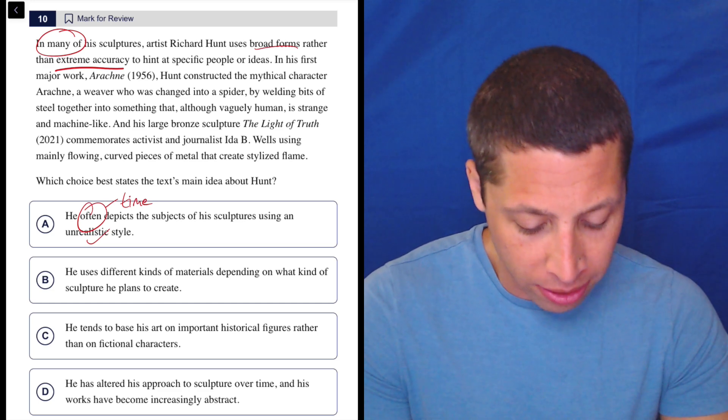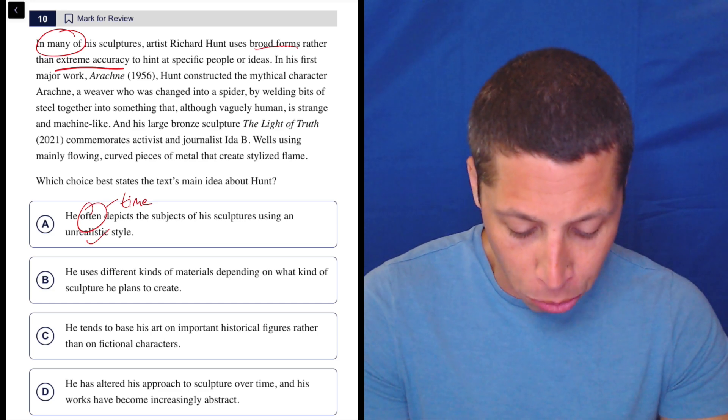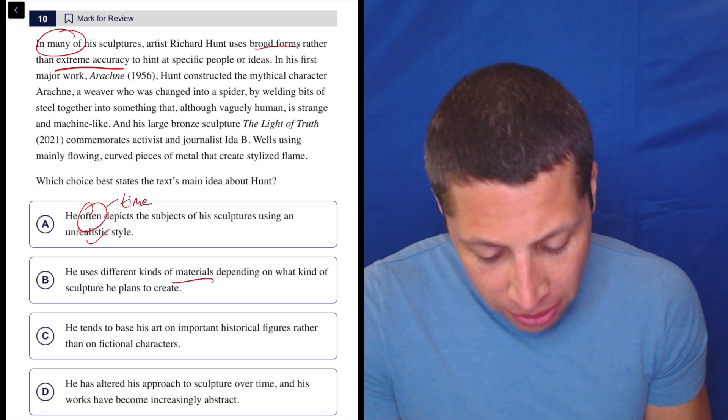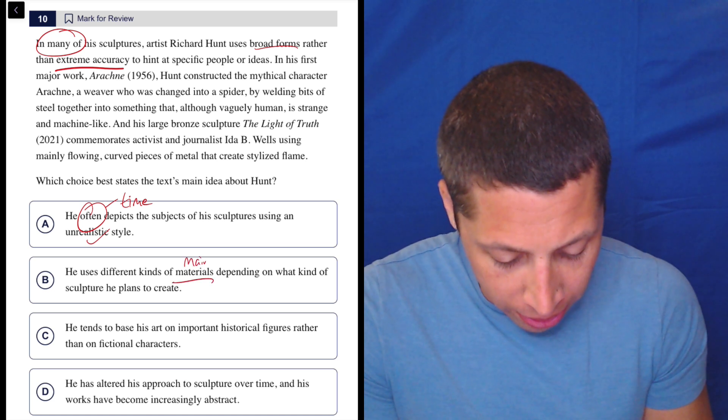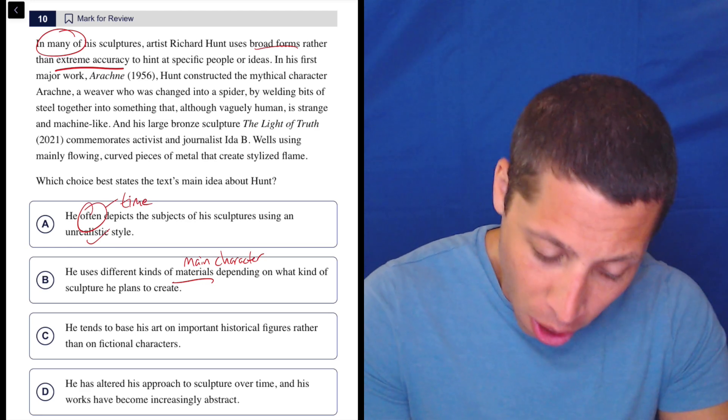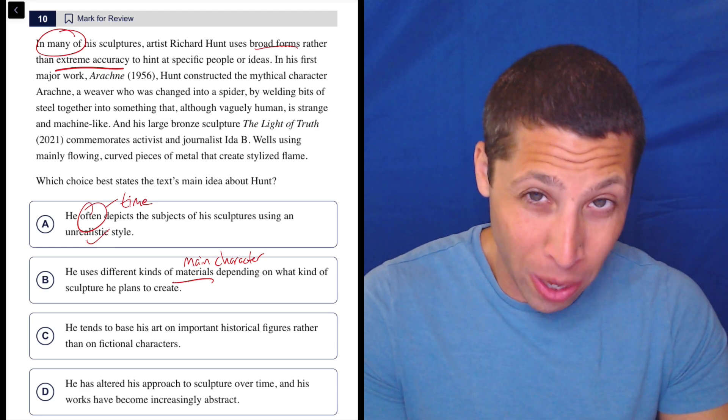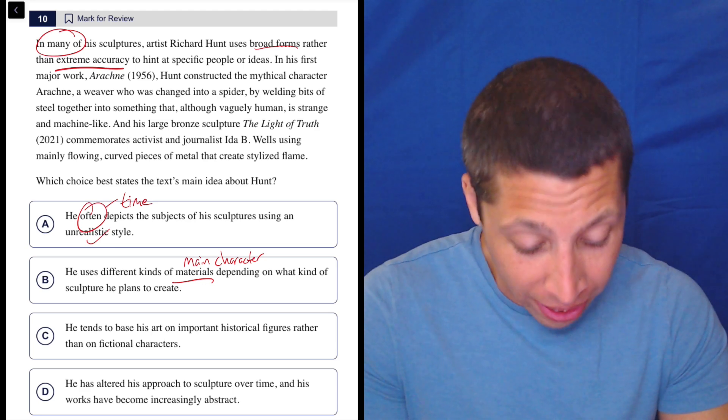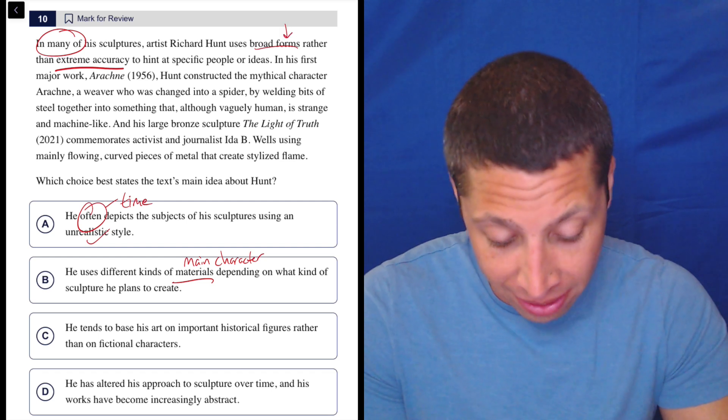B: He uses different kinds of materials depending on what kind of sculpture he plans to create. Now, to me, this is the main character issue, right? Are we really talking about the main character or the materials of the sculptures? No, we're talking about the way the sculptures look is more what I get here, right? The form of the sculpture. That's the main character.